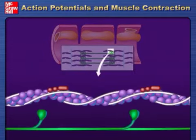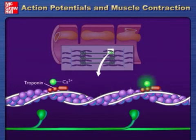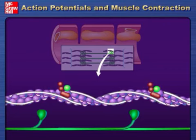Long filamentous tropomyosin proteins lie on two sides of the actin myofilament, covering up the sites where myosin can bind to the actin myofilament. Globular troponin proteins are attached to the tropomyosin. When calcium ions bind to troponin, this causes troponin to change conformation and move the tropomyosin.